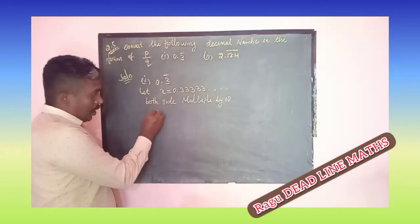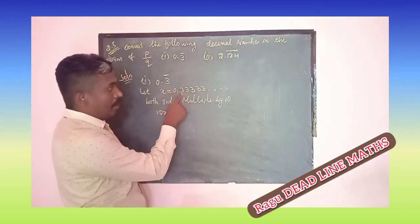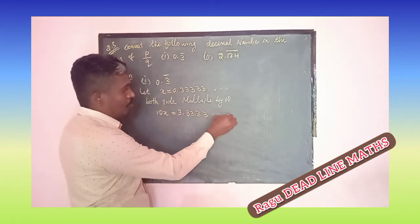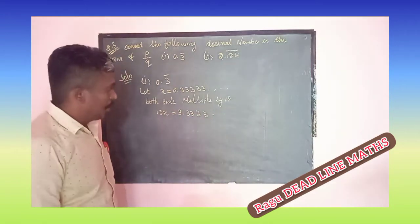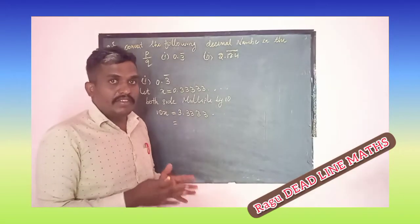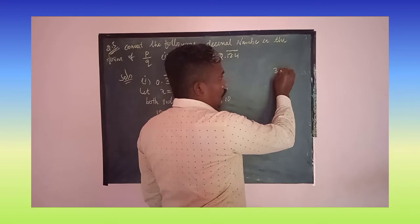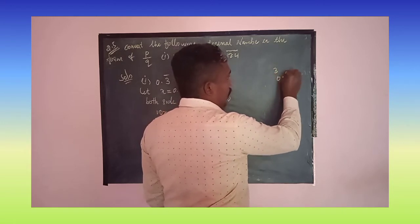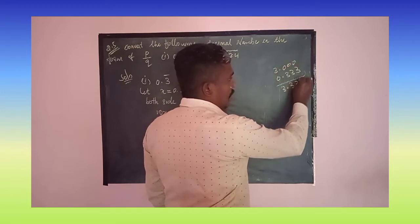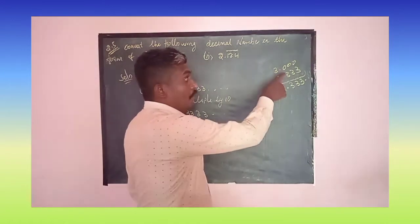So 10 × x = 10x = 3.3333... and so on, the number keeps going. Now we split and write it: 3.333... can be written as 3 plus 0.3333... and since 0.333... is just x, we can substitute.